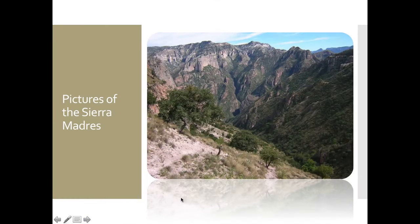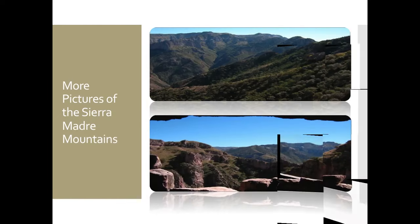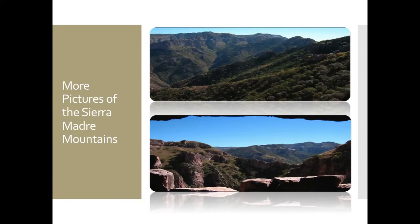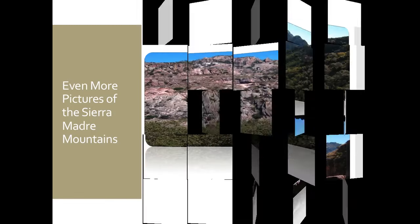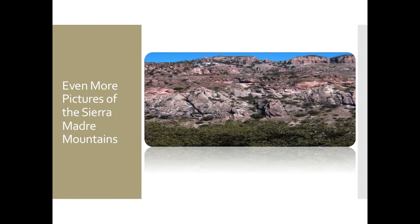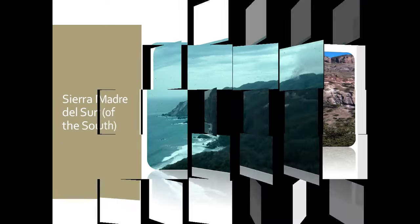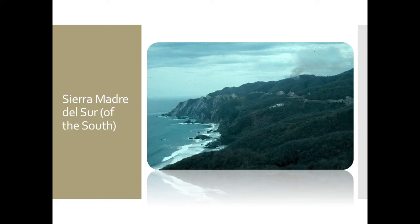This is what it looks like in the Sierra Madre Mountains — very dry, shrubby, not a lot of trees. We would call it arid. This is further north, north of the tropics, and very difficult to travel because there are not a lot of flat areas. When you get further south in the Sierra Madre del Sur, it's a little bit greener because you're closer to the tropics, but it's still extremely rugged and hard to travel from place to place.